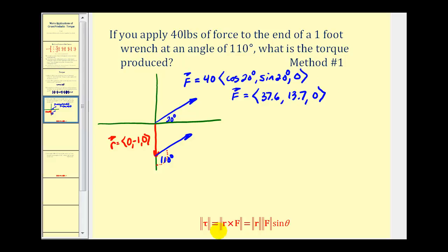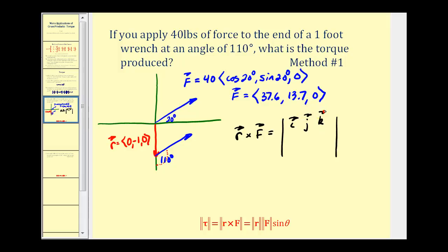Now we need to cross R and F and then find the magnitude. R crossed with F is equal to the three-by-three determinant where the first row is I, J, K; the second row contains the components from vector R: zero, negative one, zero; and the third row contains the components from vector F: thirty-seven point six, thirteen point seven, zero.